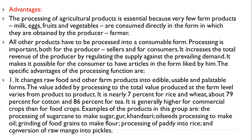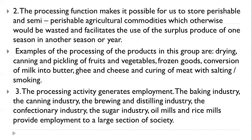Advantage number one: it changes raw food and other farm products into edible, usable, and palatable forms. The value added by the processing to the total value produced at farm level varies from product to product. It is nearly 7% for rice and wheat, about 79% for cotton, and 86% for tea. It is generally higher for commercial crops than for fruit crops. Examples include the processing of sugarcane to make sugar, oil seed processing to make oil, grinding of food grains to make flour, processing of paddy into rice, and conversion of raw mango into pickles.